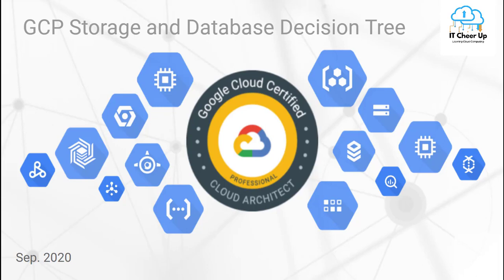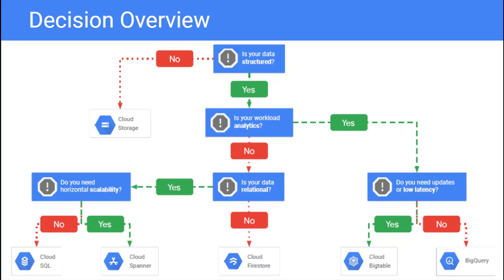In my blog, Last Minute Cheat Sheet for GCP-PCA exam, I list four decision trees to help you choose the right services in the exam. Let's walk through the first one: the storage and database decision tree.